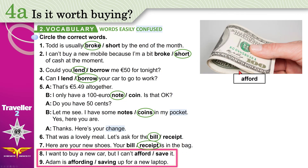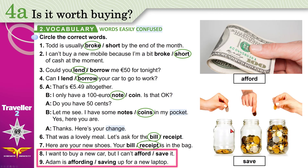Afford and save. When you can afford something, you have enough money to pay for it. When you save, you put money aside — in a jar, for example — to use it later, to let it grow, to buy something later. I want to buy a new car but I can't afford it — I don't have enough money. Adam is saving up for a new laptop — he's putting money aside for later to buy it.